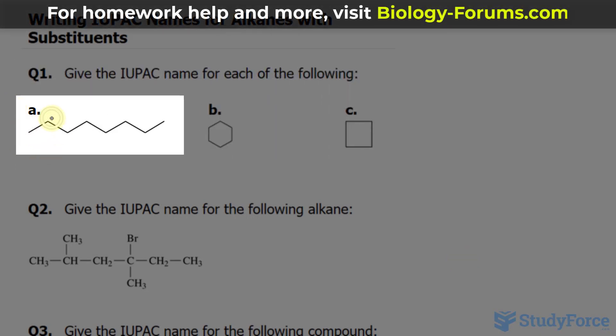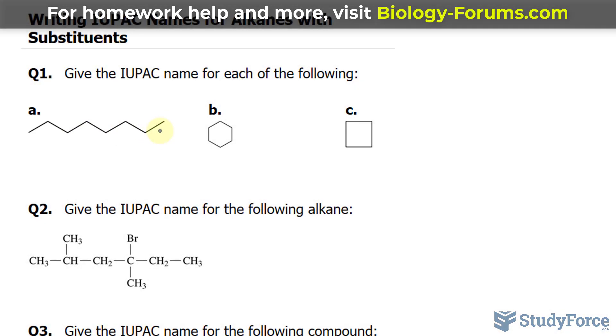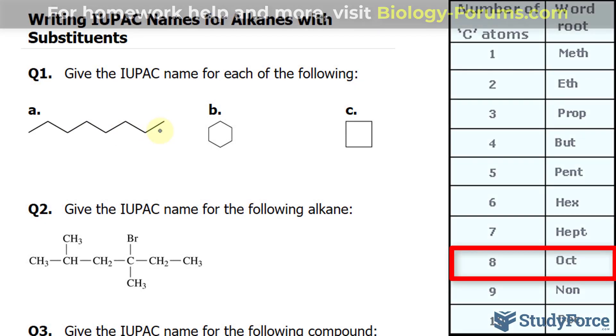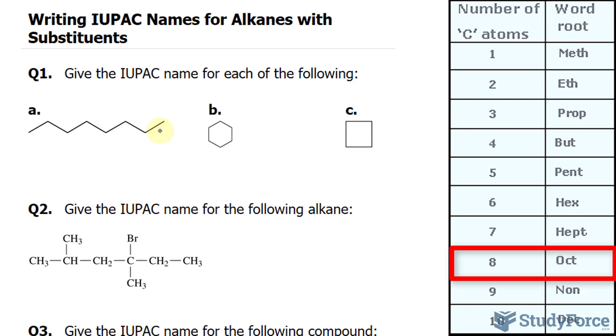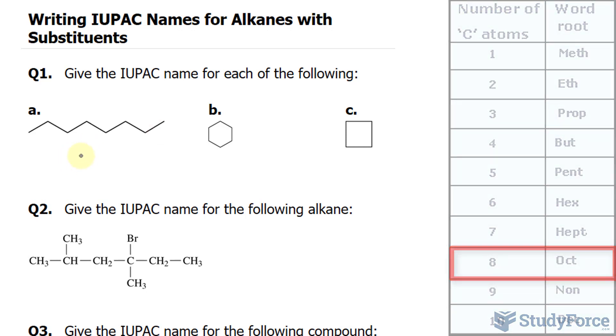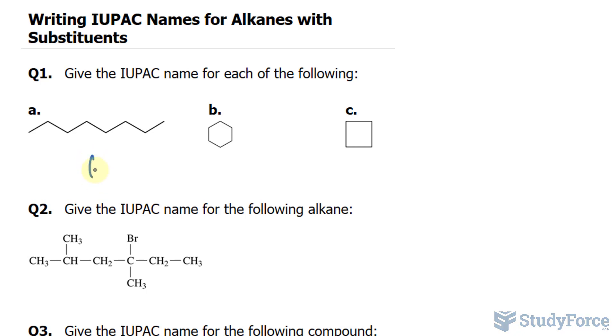Beginning with A, we have 1, 2, 3, 4, 5, 6, 7, 8—8 carbons. The prefix for 8 is oct, O-C-T, and for alkane molecules, you end with the suffix A-N-E. That's the base term, so octane.